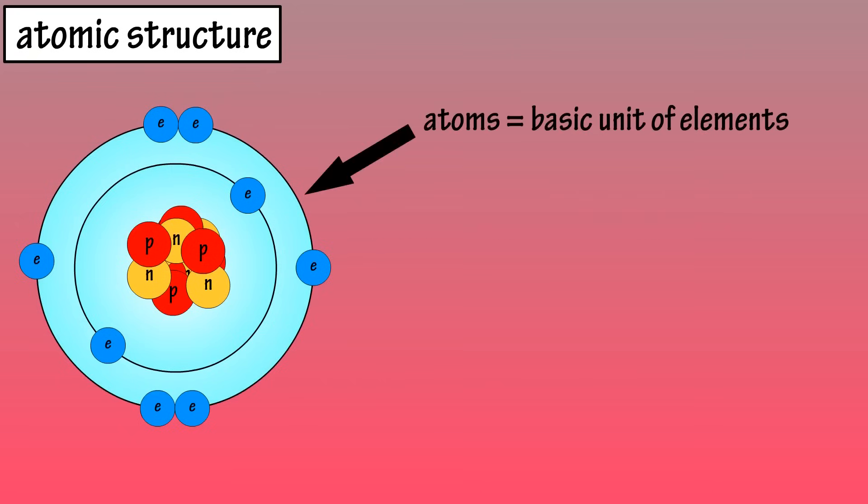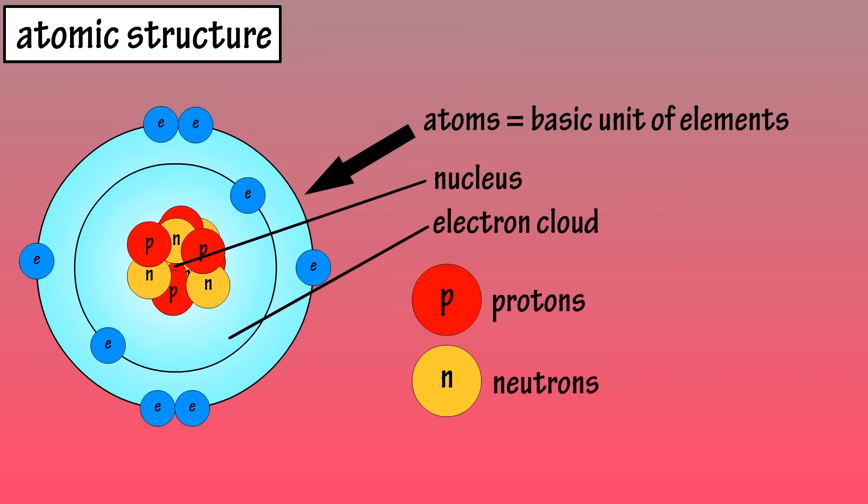Atoms are the basic unit of chemical elements. They contain subatomic particles in their nucleus and in the electron cloud that surrounds the nucleus. These subatomic particles include protons and neutrons, which are located in the nucleus, and electrons, which are located in the cloud or field that surrounds the nucleus.